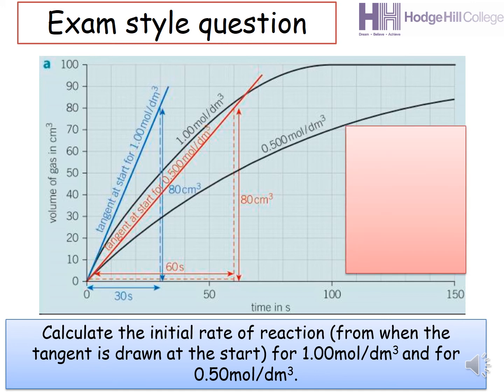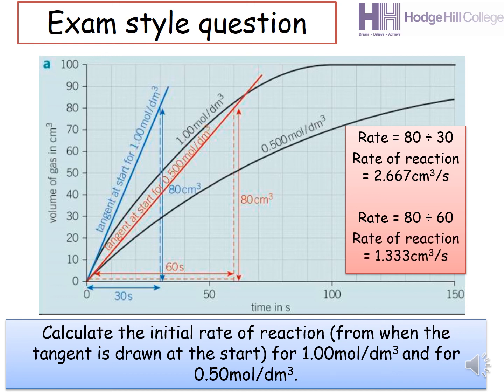Now, for the first reaction, for 1.00 mole per dm cube, the rate would be equal to 80. As you can see, the change in y is 80 divided by the change in x, 30 seconds. And my answer, I've written it to three decimal places. So it is 2.667 centimeter cube per second. Now, for the next reaction, 0.500 mole per dm cube, you'd use the red triangle. Again, change in y divided by change in x. So we have 80 divided by 60. In this case, the rate of reaction is equal to 1.333 centimeter cube per second.